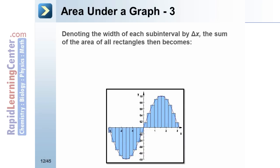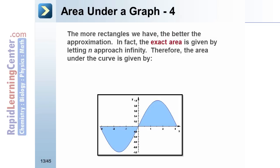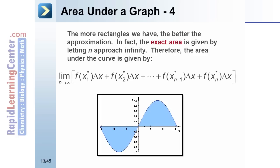Denoting the width of each sub-interval by delta x, the sum of the areas of all the rectangles becomes f(x sub 1 star) times delta x plus f(x sub 2 star) times delta x, and so forth. The more rectangles we have, the better the approximation. In fact, the exact area is given by letting n approach infinity; therefore the area under the curve is given by the limit as n approaches infinity of the previous expression.